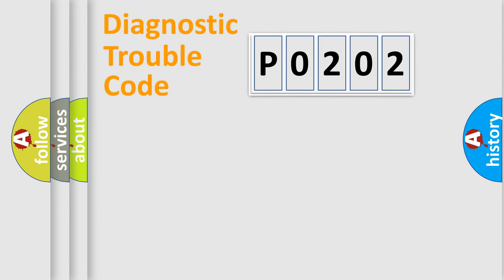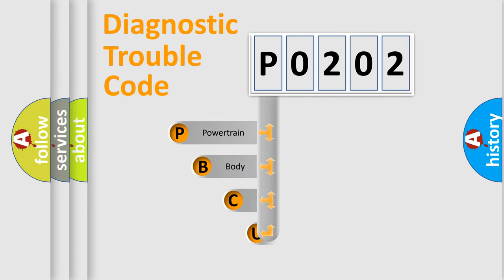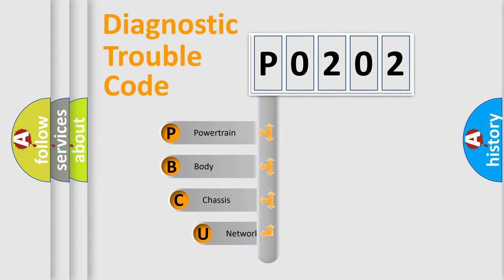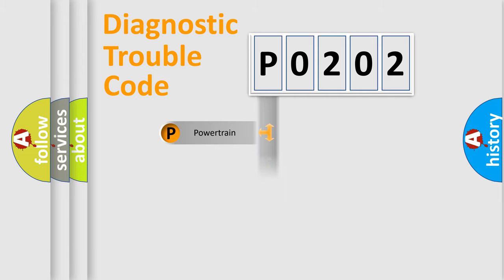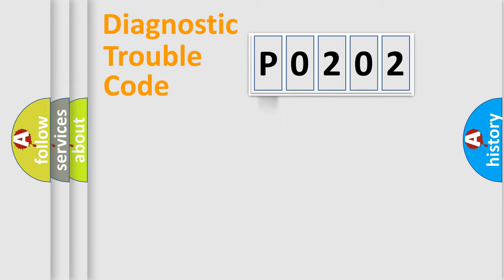Let's do this. First, let's look at the history of diagnostic fault code composition according to the OBD2 protocol, which is unified for all automakers since 2000. We divide the electrical system of the automobile into four basic units: Powertrain, Body, Chassis, and Network.